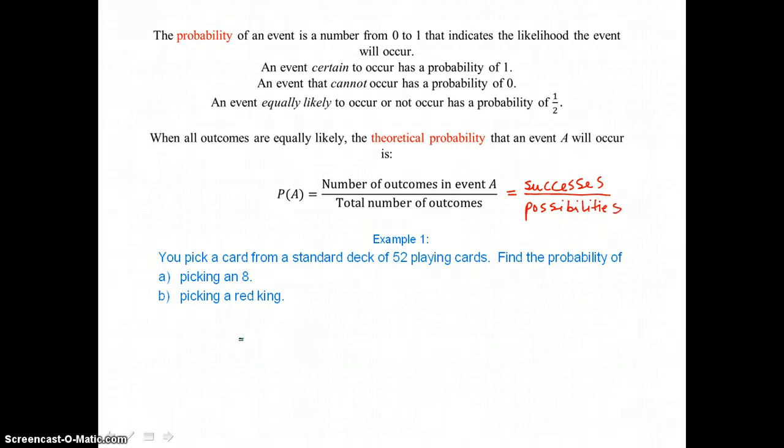In example 1 you pick a card from a standard deck of 52 playing cards. Find the probability of picking an 8. So our successes, since there's 4 eights in a deck, would be 4. And our possibilities, since there's 52 cards in this deck, would be 52. So our probability of picking an 8 would be 4/52, or simplifying we get 1 over 13.